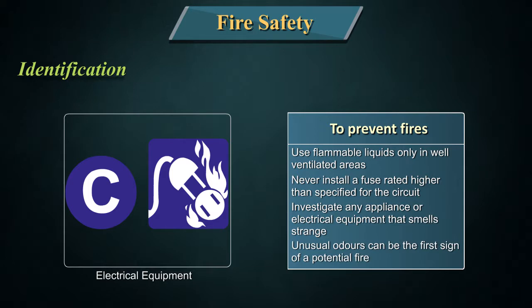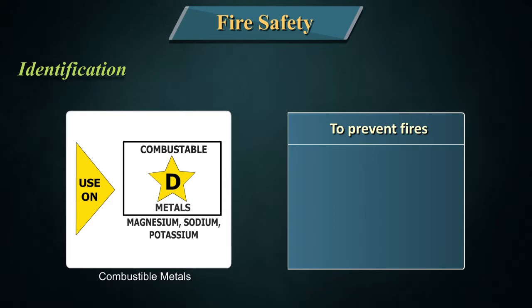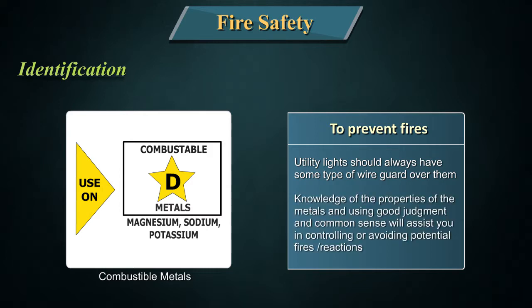Unusual odours can be the first sign of a potential fire. Symbol for combustible metals: Extinguishers for Class D fires are identified by a star containing the letter D. If coloured, the star is yellow. To prevent fires: utility lights should always have some type of wire guard over them. Knowledge of the properties of the metals and using good judgement and common sense will assist you in controlling or avoiding potential fires or reactions.